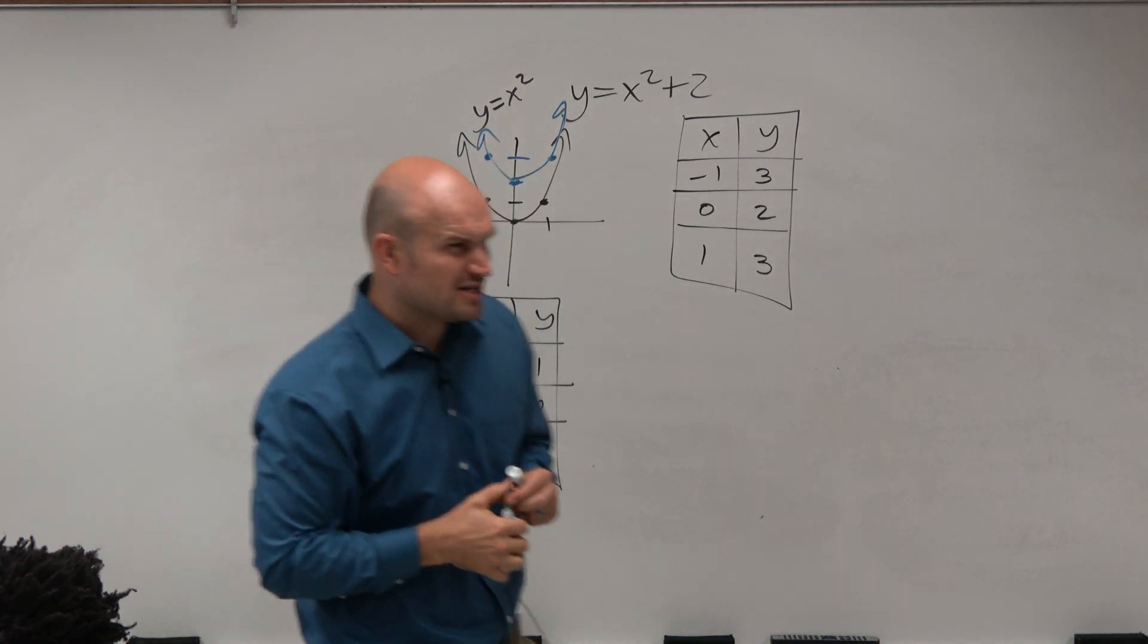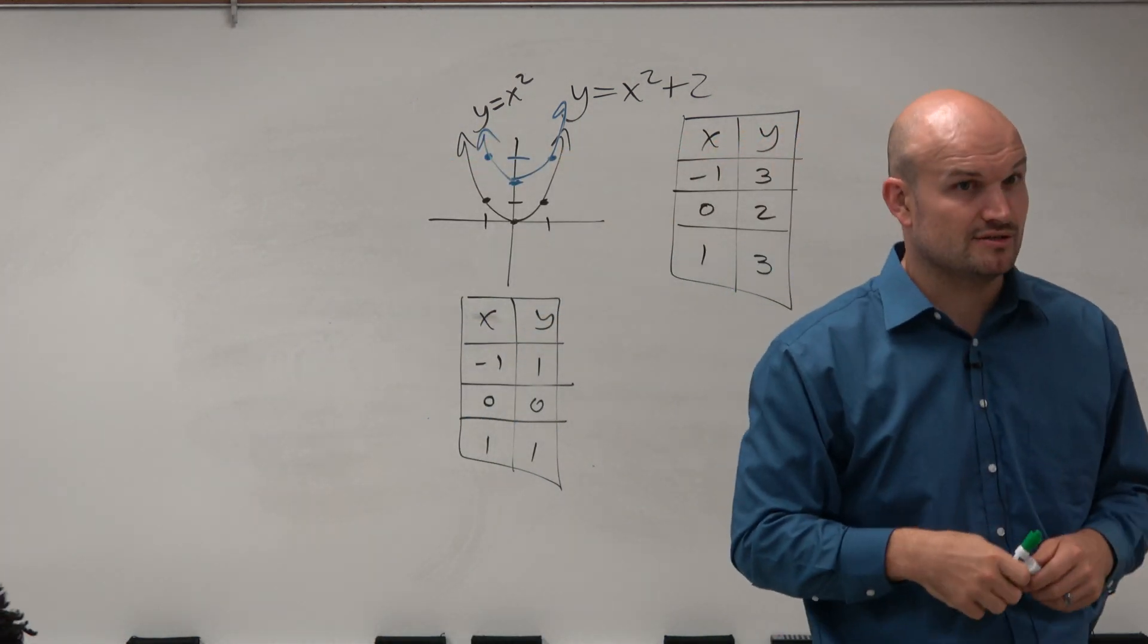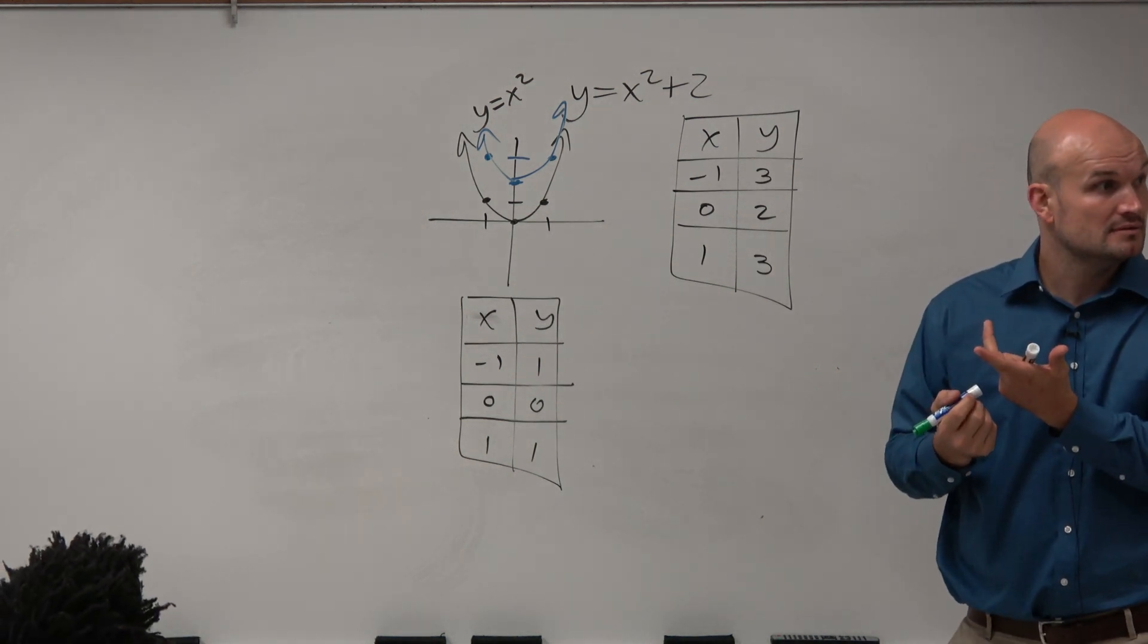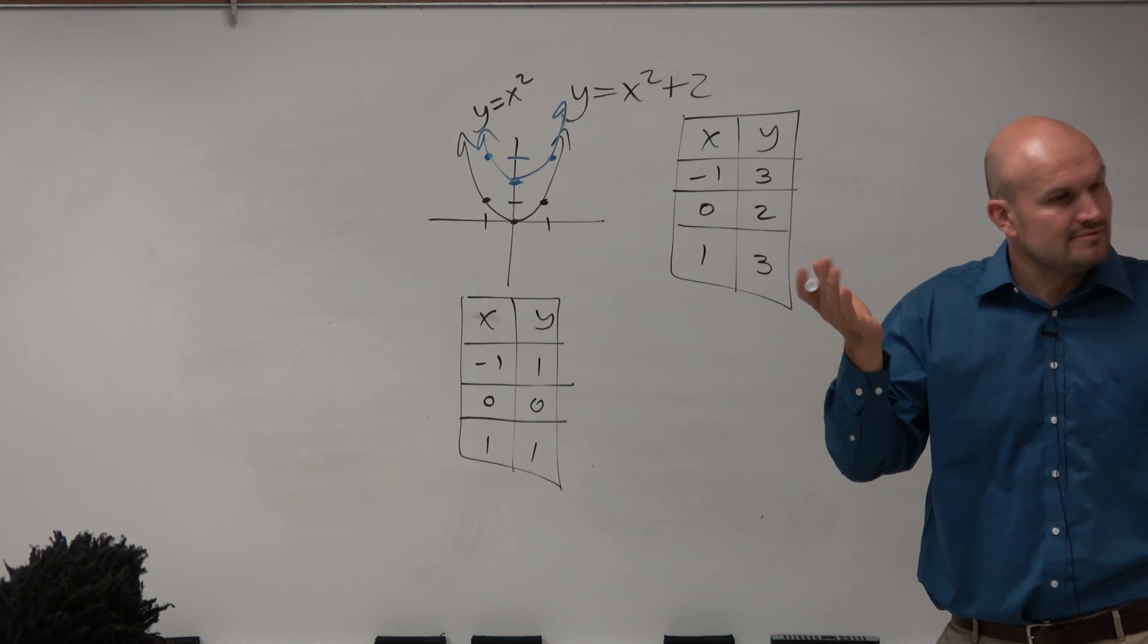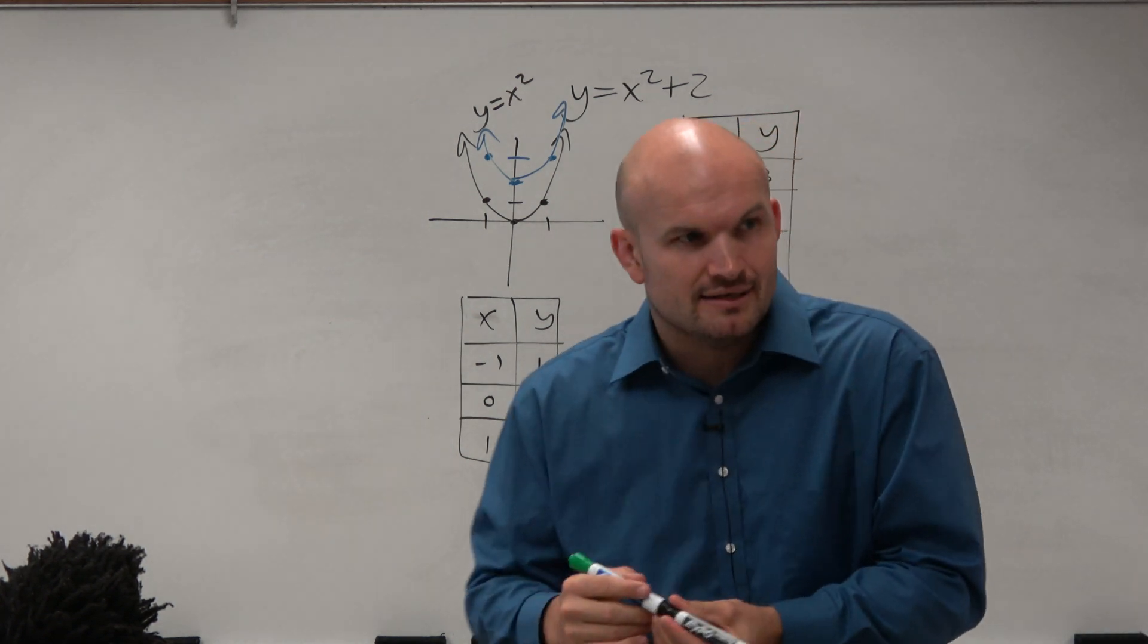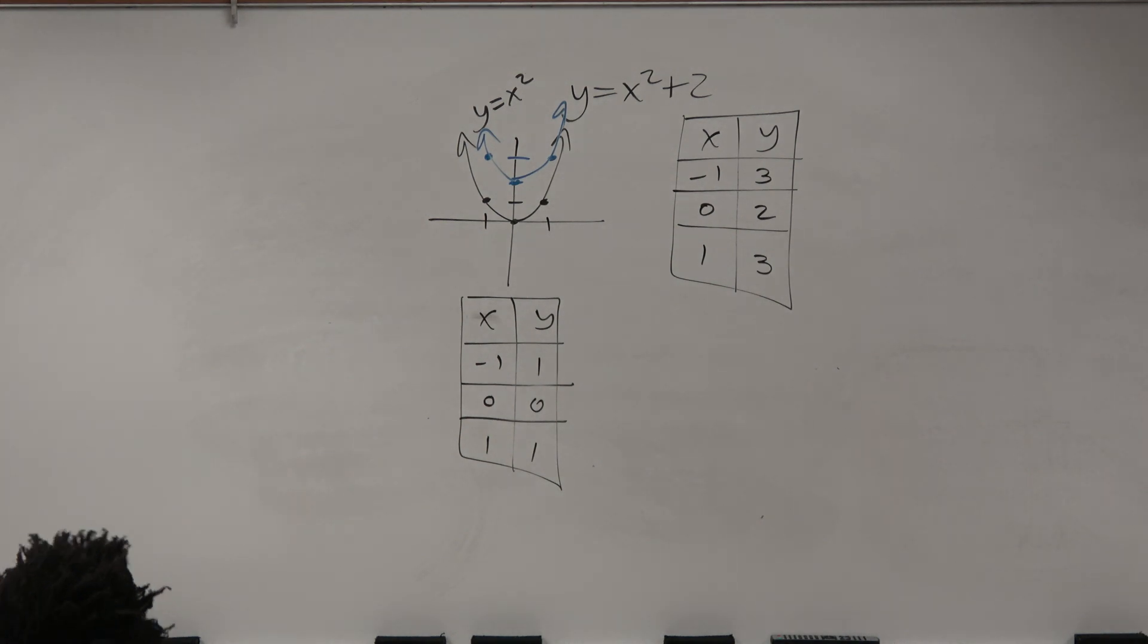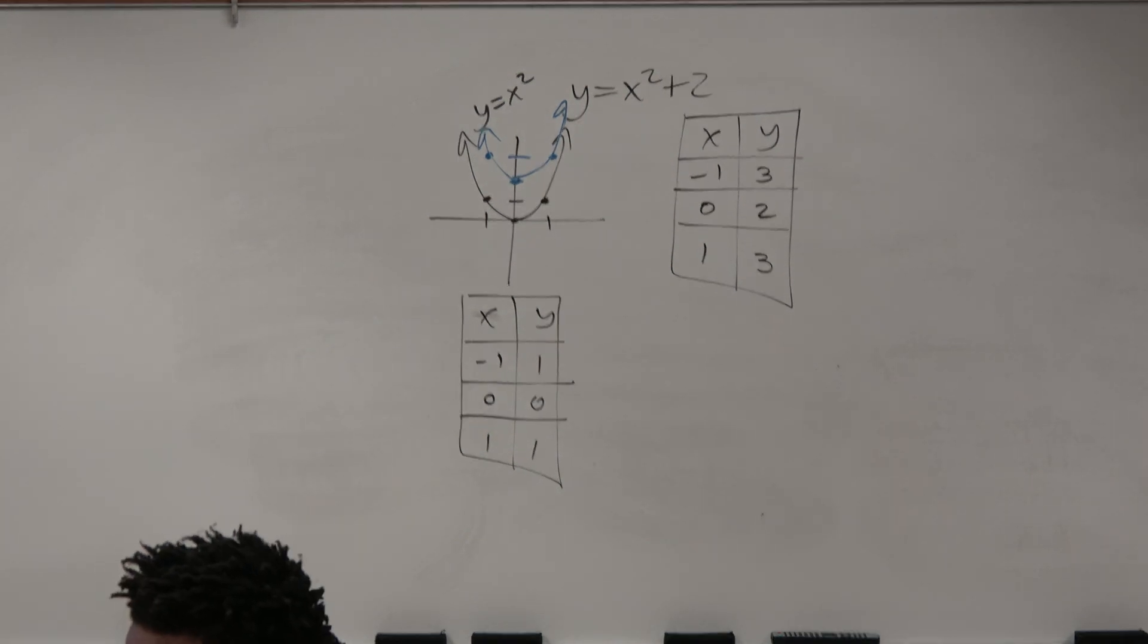So again, what was my question? The question is, what is the transformation? So what did happen from the black graph to the blue graph? Just shift it up 2, right? So if you forgot it, that's fine. Maybe just pick a couple of points and see if you can identify what exactly is happening to the graph. We're obviously going to spend it...